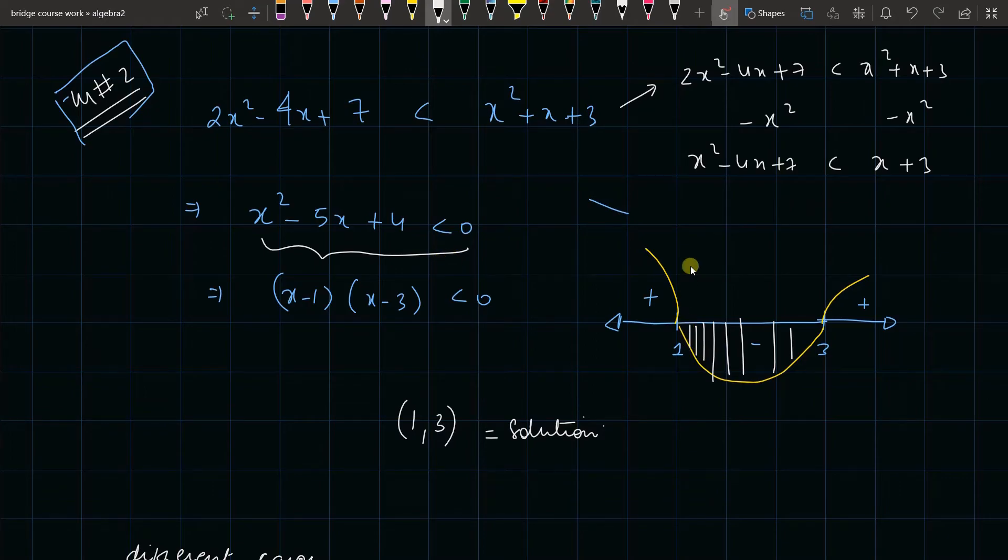So as I can see, when I simplify this algebraically, I can see (x - 1)(x - 3). And then if I try to plot on a number line, I can clearly see that 1 comma 3—this is 1, at 1 it is 0, and at 3 it is 0. So beyond 3 it is positive, in between 1 and 3 it is negative, and beyond 1 till negative infinity it is positive.